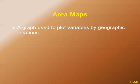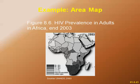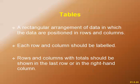Area maps are simply graphs used to plot variables by geographic location. An example shows HIV prevalence in adults in Africa at the end of the year 2003.